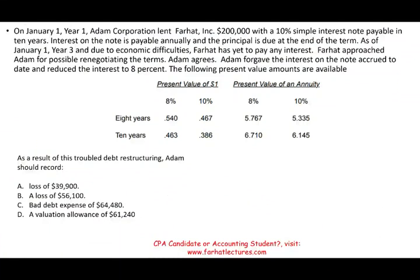Let's take a look at this exercise to illustrate the concept. On January 1st, Year 1, Adam Court lent Farhat $200,000 with a 10% simple interest note payable in 10 years. The question asks: as a result of this debt restructuring, what should Adam record? Since it's debt restructuring involving a receivable, Adam will have a bad debt expense and a valuation account — so I'm already down to 50/50. My answer is either C or D.